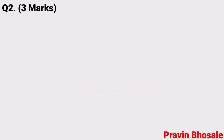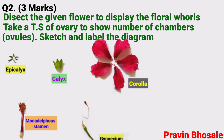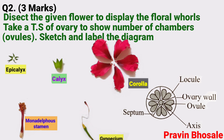Question number two, three marks. There are three experiments. First: dissect the given flower to display the floral whorls. Take a TS of ovary to show the number of chambers, locules. Sketch and label the diagram.